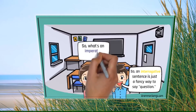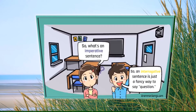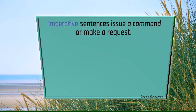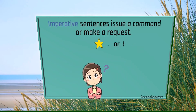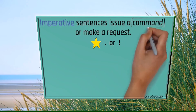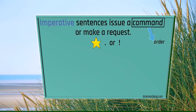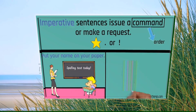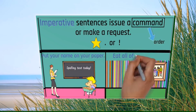What's an imperative sentence? Imperative sentences issue a command or make a request. They are a little tricky to immediately spot because they can end with a period or an exclamation mark. So when you think of a command, it's kind of like an order telling you to do something. For example, 'Put your name on your paper' or 'Eat all of your sushi.'